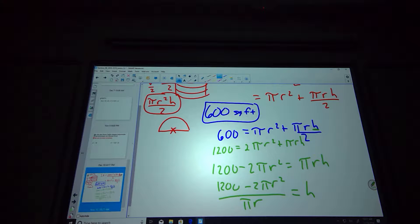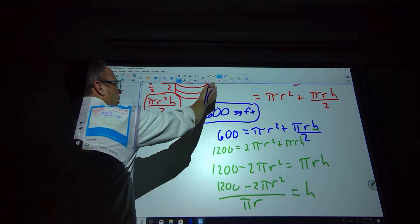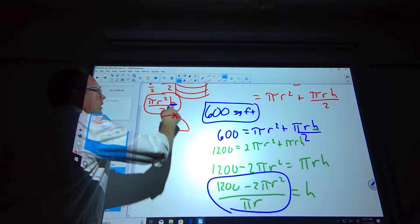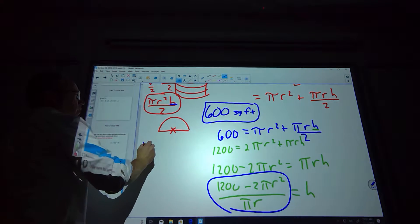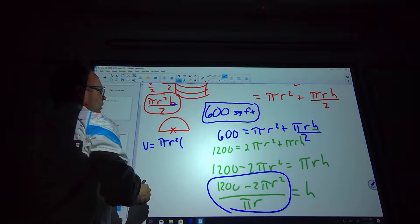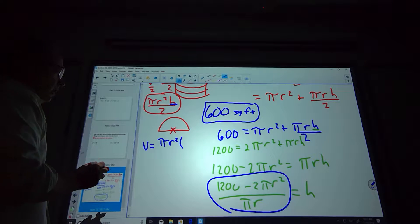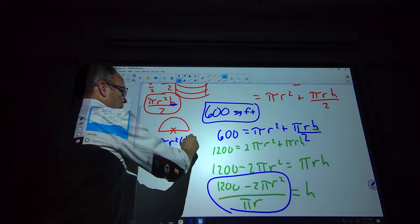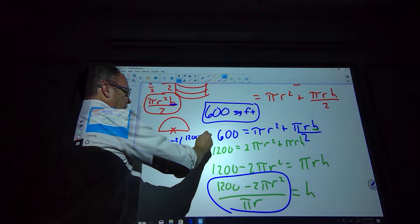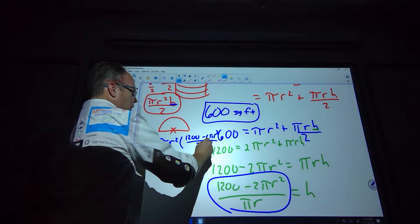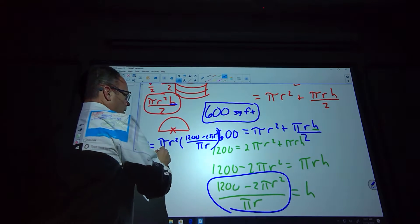1200 minus 2πr² is equal to πrh. Divide everything by that, so I'm going to get 1200 minus 2πr² over πr equals h. Yowzers. So, that is our height equation. So, now I can use that as my volume equation. So, I'm going to plug this. This whole thing goes in for that h. So, my volume in relation is going to be πr² times... I know I'm not going to give you one this hard on the test, but hey, I'm up for the challenge.